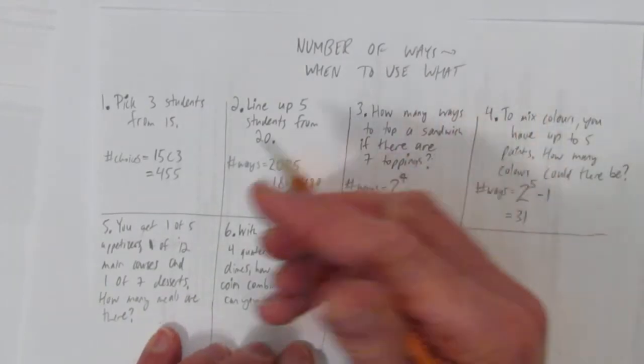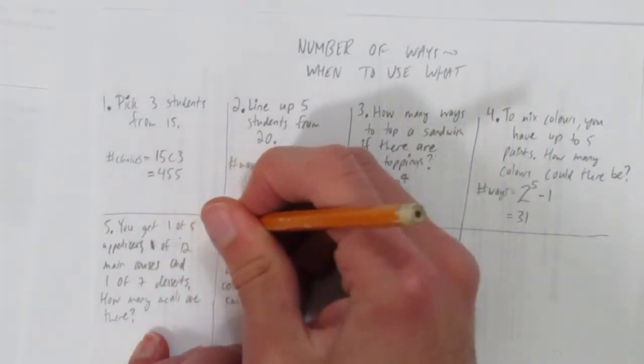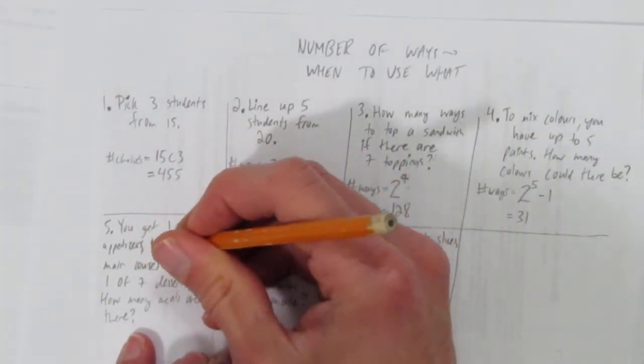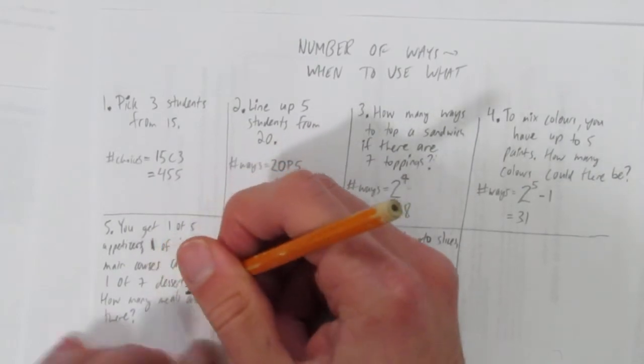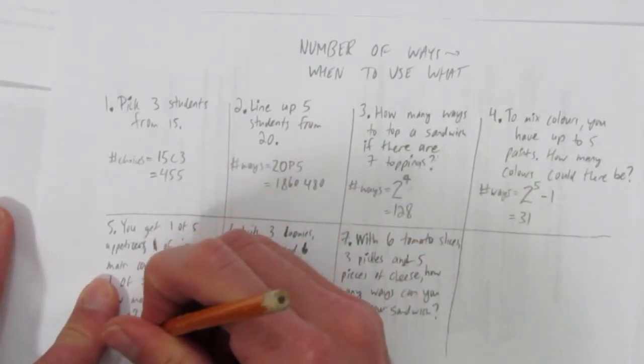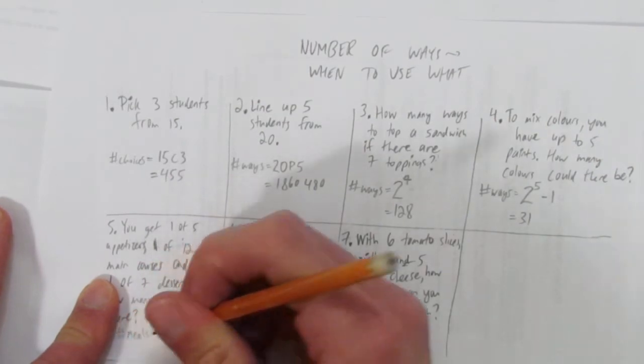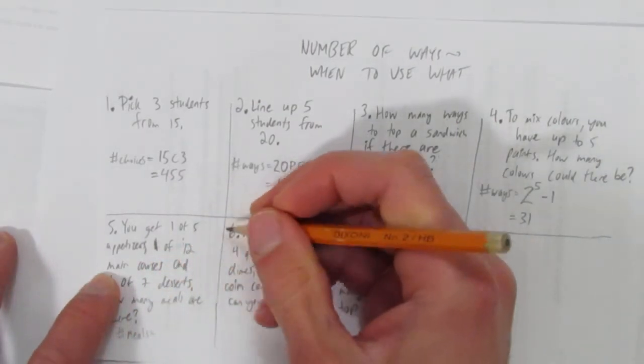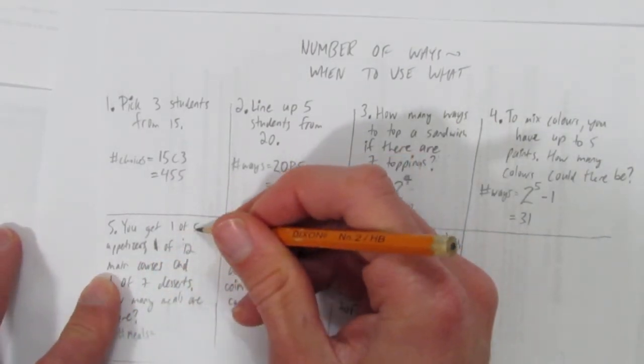Question five: you get one of five appetizers, one of twelve main courses, and one of seven desserts. How many meals are there?